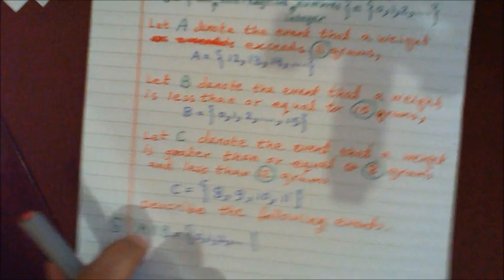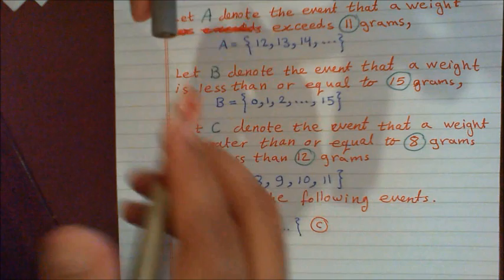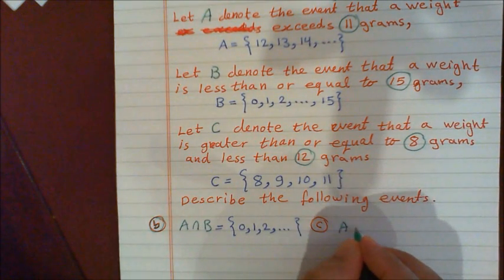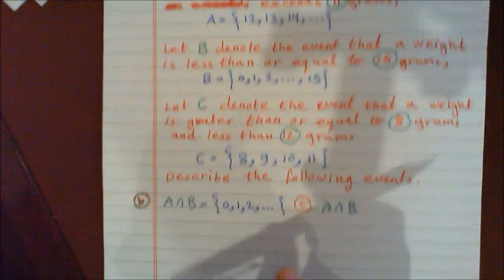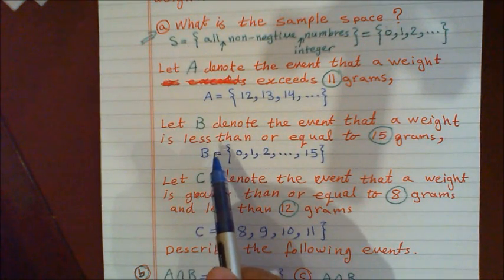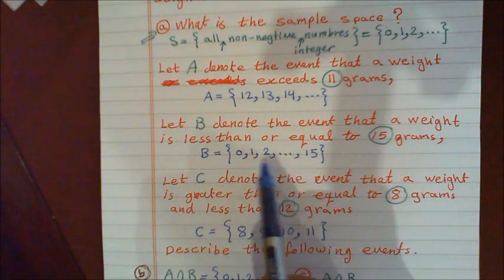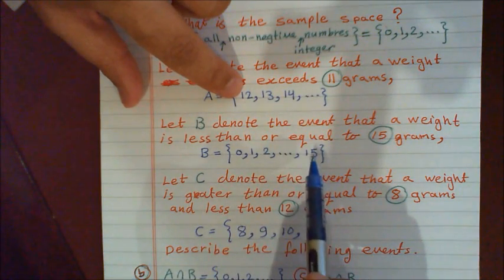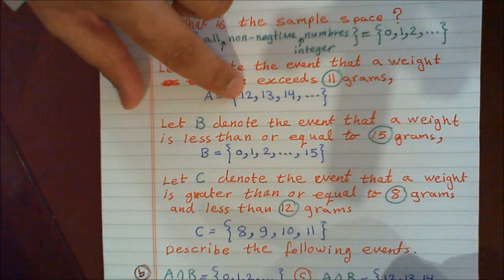Question C asks for A ∩ B. A is from 12 to infinity, and B is from 0 to 15. Their intersection — the elements shared by both — is {12, 13, 14, 15}, since those are the values that fall in both ranges.